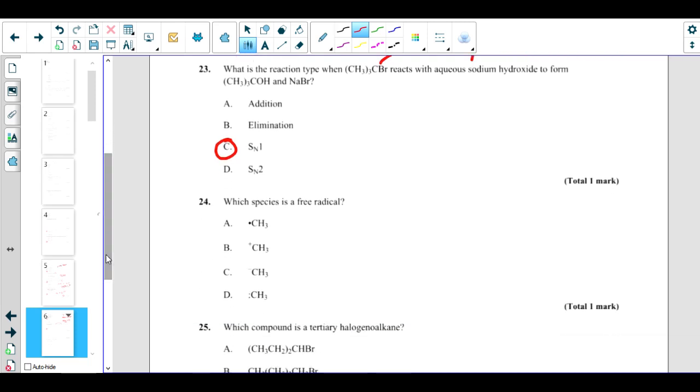Which species is a free radical? If you see, this is a charged species, not a free radical. Not a free radical - it has a lone pair, no. This one is the free radical, which is CH3 dot, formed from methane.